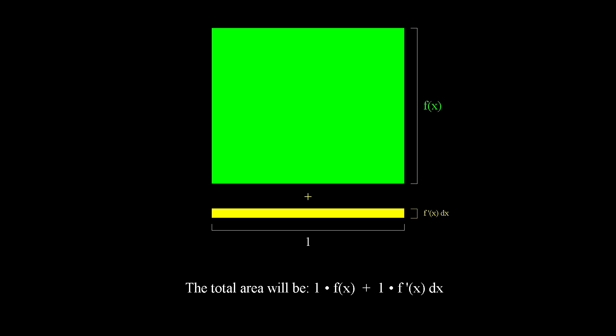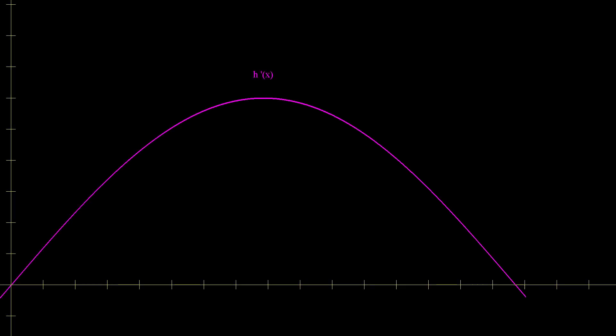Going back to our original problem, we can write the total area as 1 times f of x plus 1 times f prime dx. This is great, but what if we were only given the derivative and were tasked to find by how much the area of the rectangle changes over two intervals?